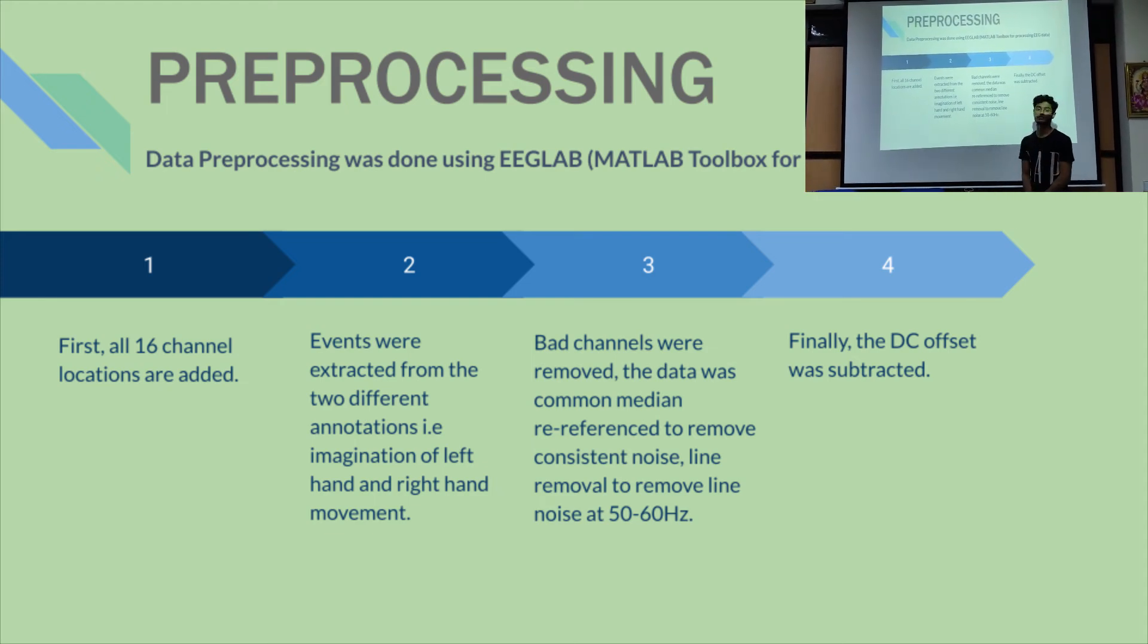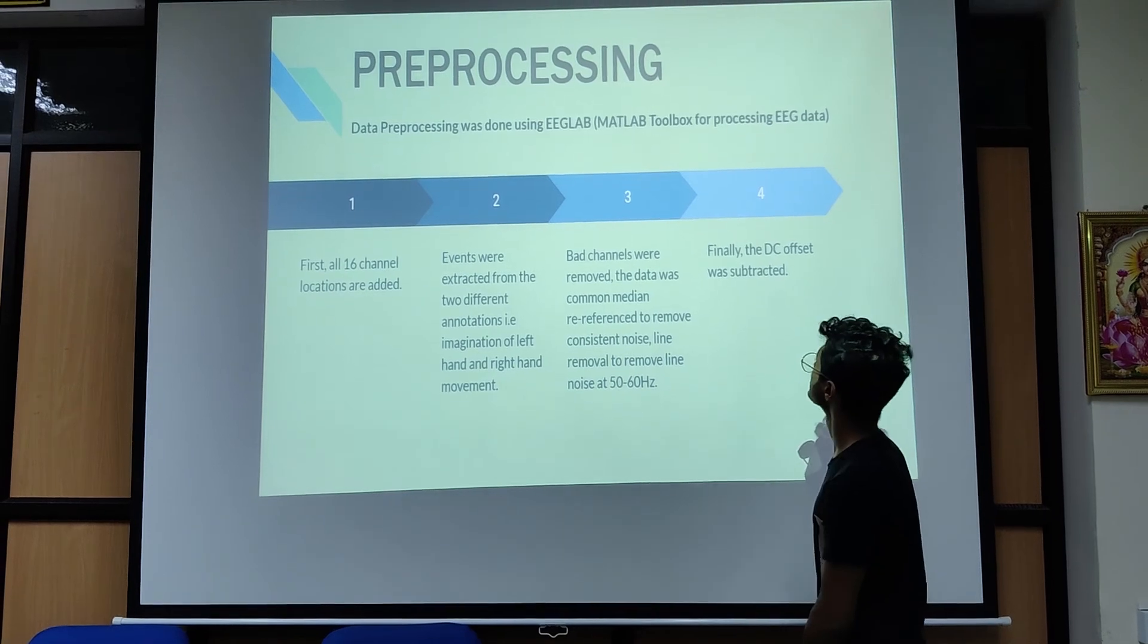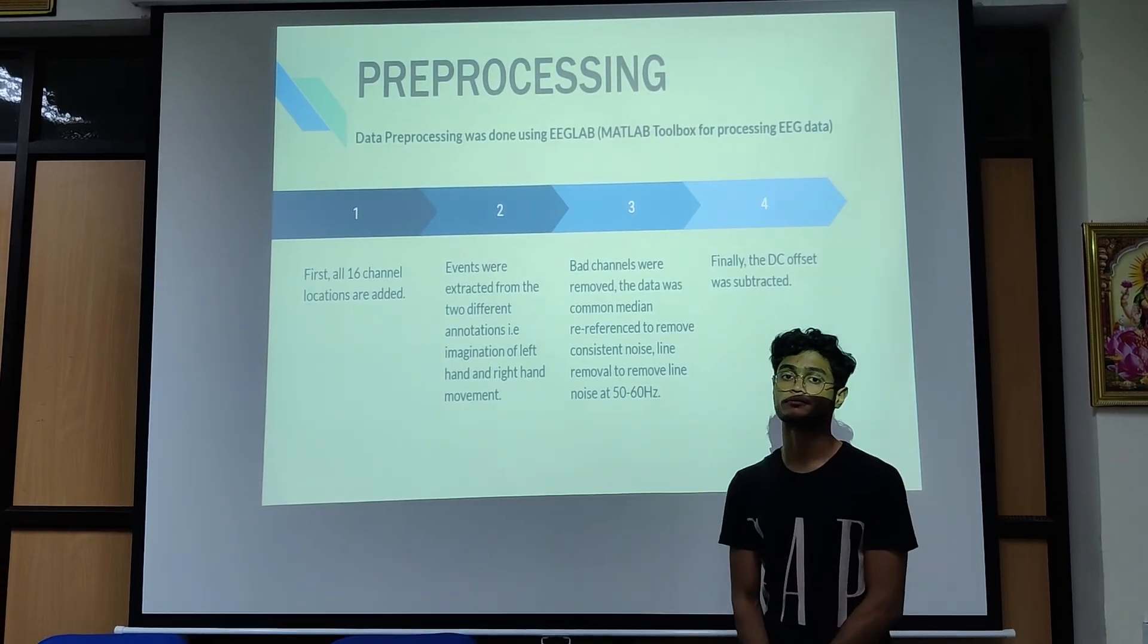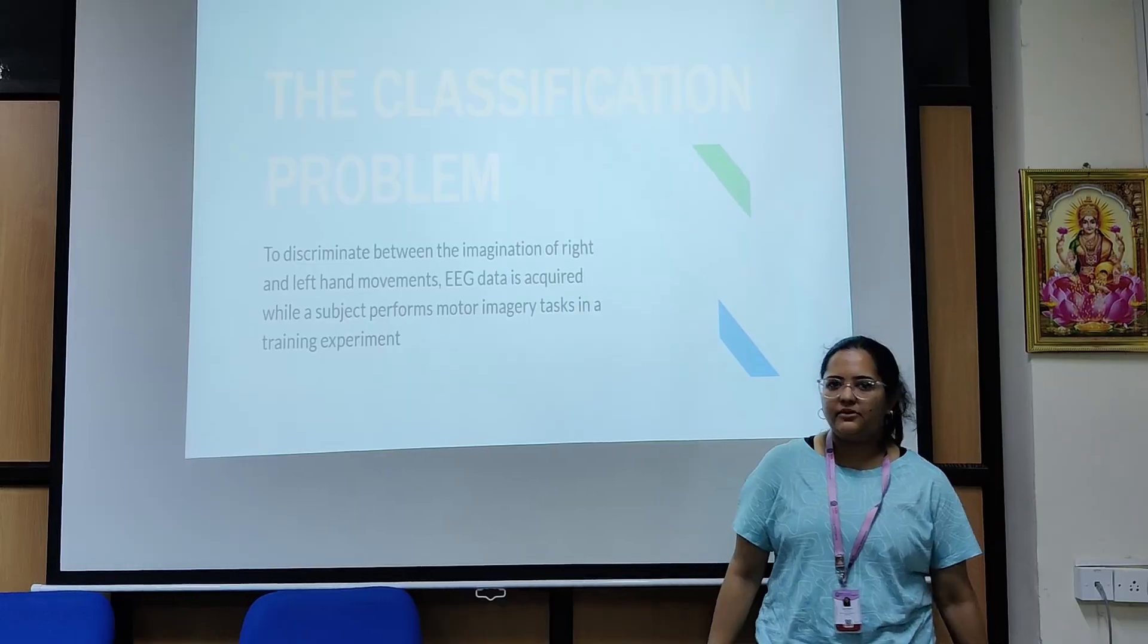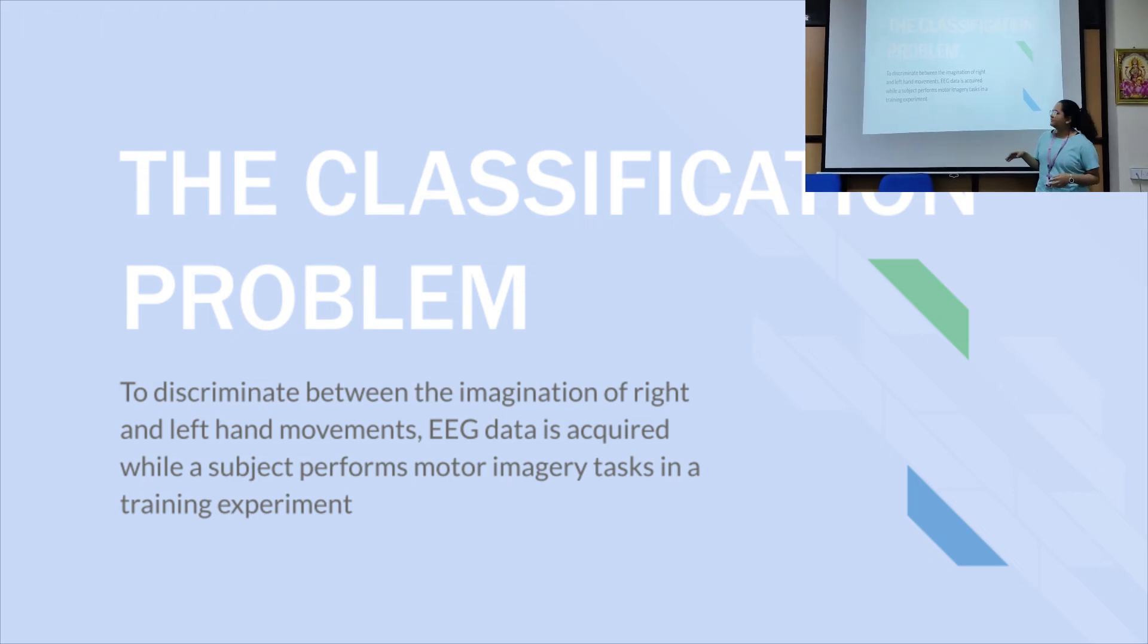And then line notch filter to remove line noise at 50 hertz signals. Line noise is basically due to AC supply or background noise. Then we have the whole set in which the EEG offset was subtracted. So the actual objective of the project is to discriminate between the imagination of your right hand and your left hand movements. And to do this, we took EEG data from while our subject performed motor imagery tasks during a training experiment. So the EEG experiment was performed as follows.